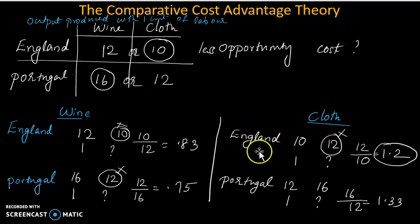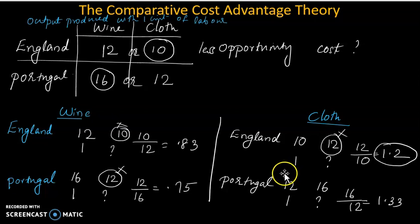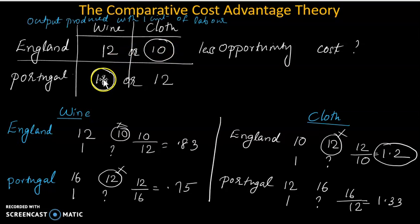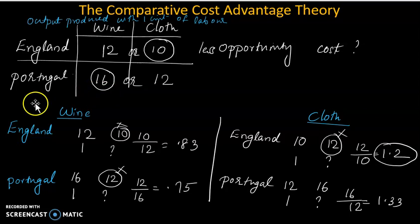If you find out the opportunity cost, you will get it, though it is a little bit complicated. A commodity produces a total output at the world level.